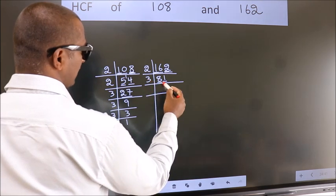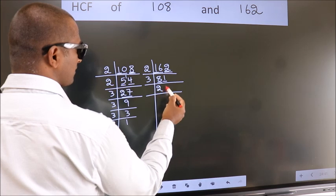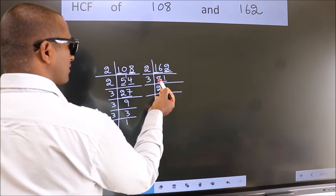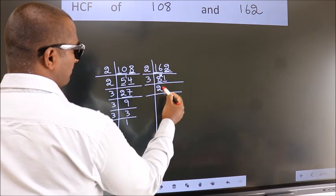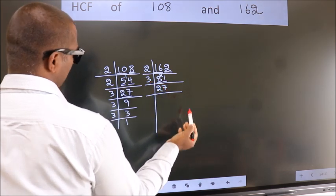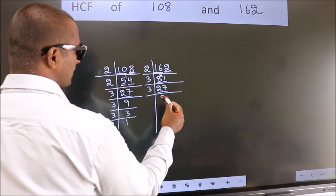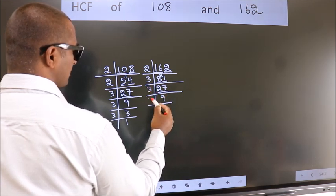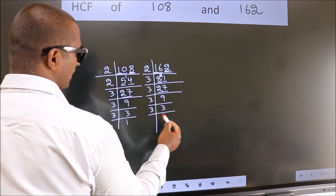First number 8. A number close to 8 in 3 table is 3 sixes 6. 8 minus 6, 2, 2 carried forward 21. When do we get 21 in 3 table? 3 sevens 21. Now, 27 is 3 nines 27. 9 is 3 threes 9. 3 is a prime number, so 3 ones 3.